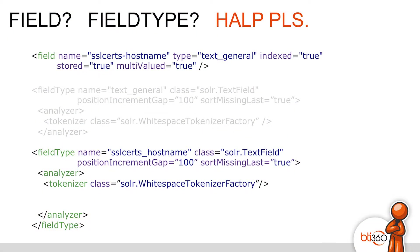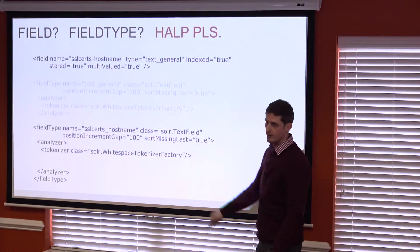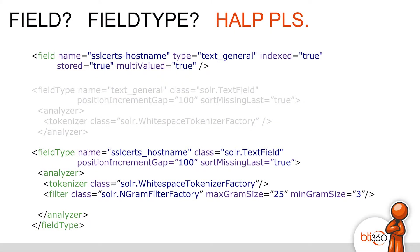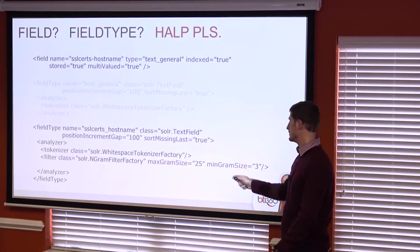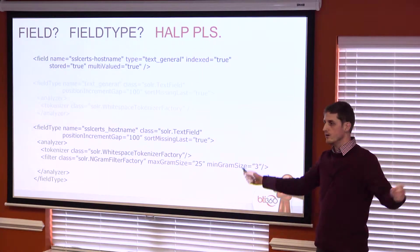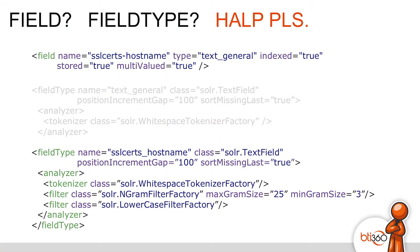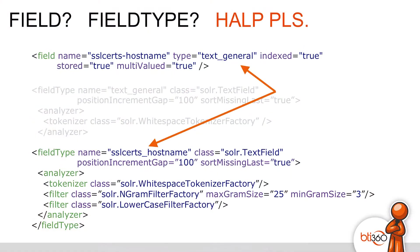So what we need to do is come up with a different field type to define what it means. We can still use white space tokenizing since splitting by white space is fine; there's probably a better one, but it still makes the test pass. And this n-gram filter factory basically just means I'm going to split it up into partial matches, so that you can find partial matches of your search query. Lowercase filter factory is a filter that lowercases your search term. So it lowercases all the partial matches and splits by white space. We're still defining it as text_general, and all we have to do is change it to use this new field type.